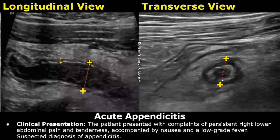Here is an example of acute appendicitis. This is the clinical presentation. The patient presented with complaints of persistent right lower abdominal pain and tenderness, accompanied by nausea and a low-grade fever, with a suspected diagnosis of appendicitis.